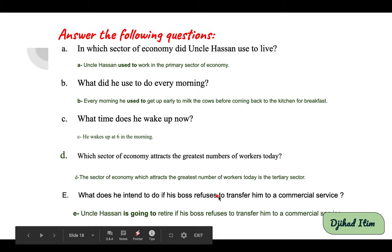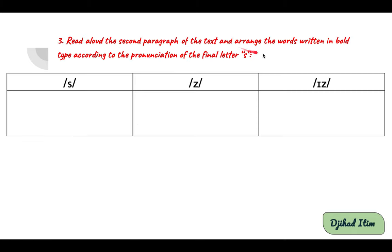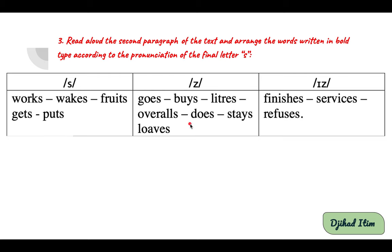Question E: what does he intend to do if his boss refuses to transfer him to a commercial service? Uncle Hassan is going to retire if his boss refuses. For the pronunciation activity, arrange words in bold according to the final letter sound. Corrections: the /s/ sound — works, weeks, fruits, gets, puts; the /z/ sound — goes, buys, overalls, does, stays, loves; the /ɪz/ sound — finishes, services, refuses.